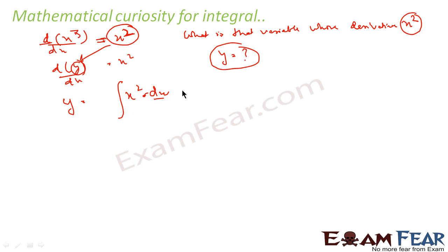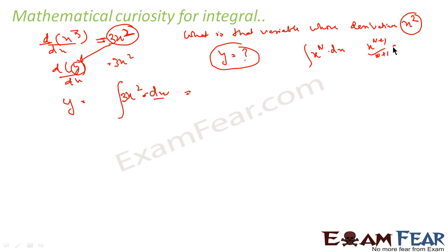We already know that the derivative of x³ is 3x². So the integral of 3x² dx should give back x³. The rule is: if you have xⁿ dx, that becomes x^(n+1) / (n+1). So in this case, integrating 3x² gives 3 · x^(2+1) / (2+1), which is 3x³/3, and that is x³. So I got the value of y, which is x³.